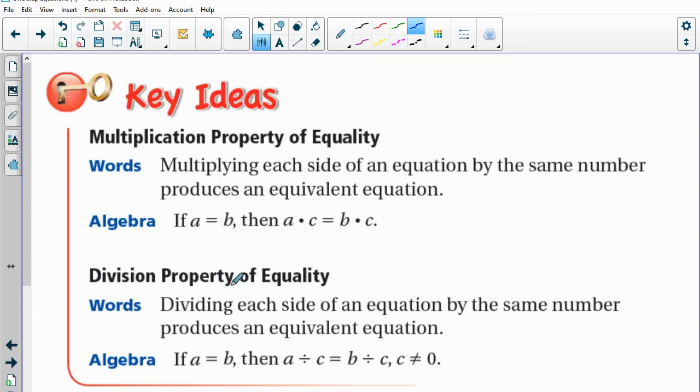By the same token, if I have an equation a = b, something like that, I can divide both sides of that equation by some number, and it will still be an equivalent equation.